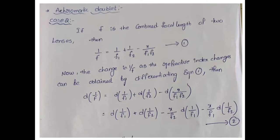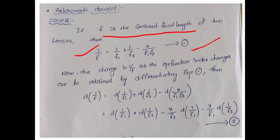For the combined focal length of separated lenses, 1/F = 1/f1 + 1/f2 − x/(f1·f2), where x is the distance between the two lenses. To find the achromatism condition, we differentiate this equation: d(1/F) = d(1/f1) + d(1/f2) − d(x/(f1·f2)). Since x is constant, applying the product rule with u = 1/f1 and v = 1/f2, we get the derivative terms.